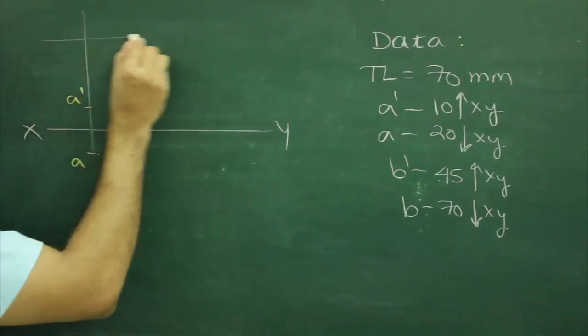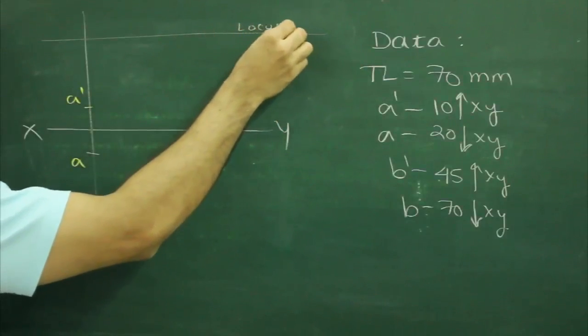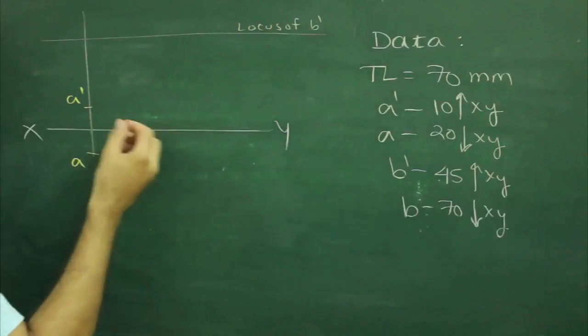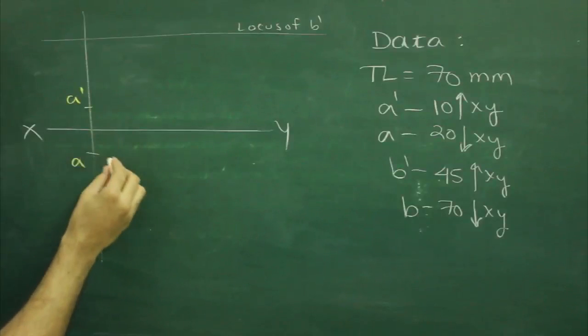From here we go up by 45, draw locus of B dash, and we will draw 70 mm which by x by 9.